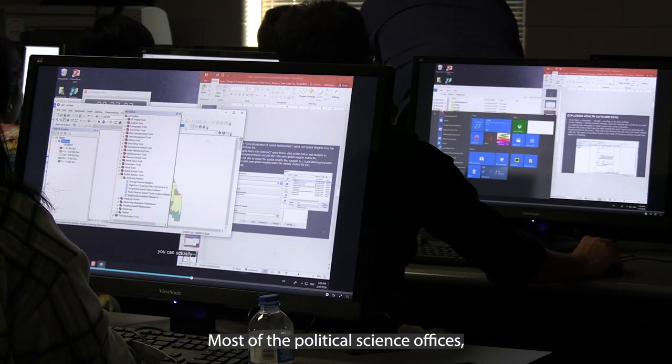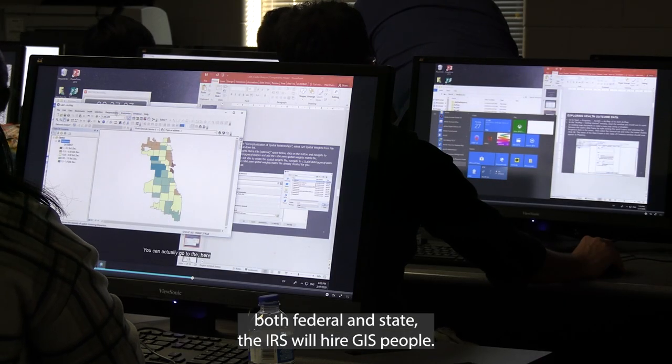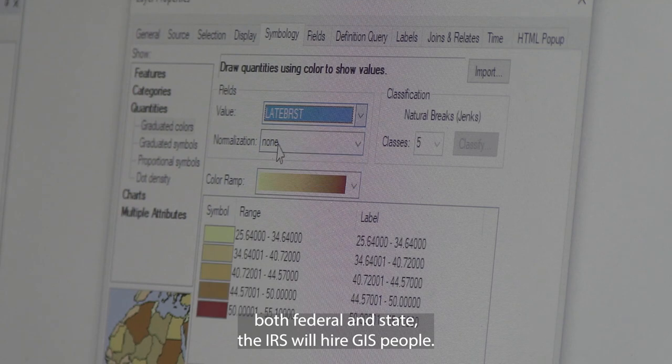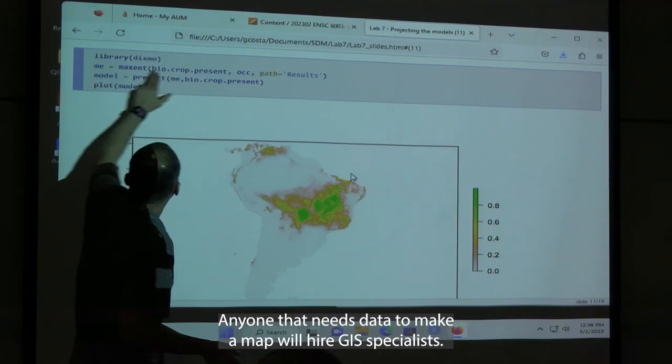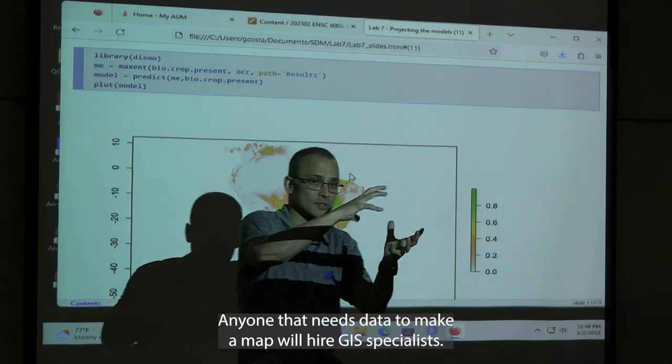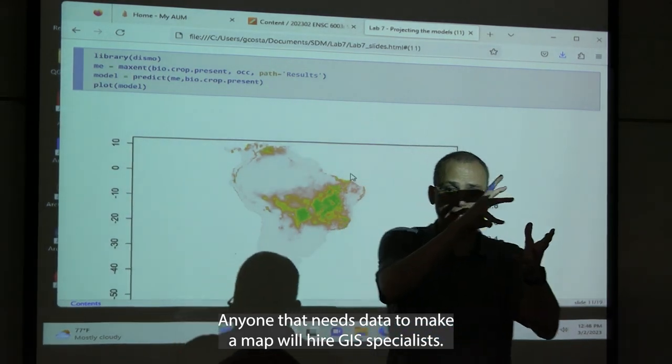Most of the political science offices, both federal and state, the IRS will hire GIS people. Anyone that needs data to make a map will hire GIS specialists.